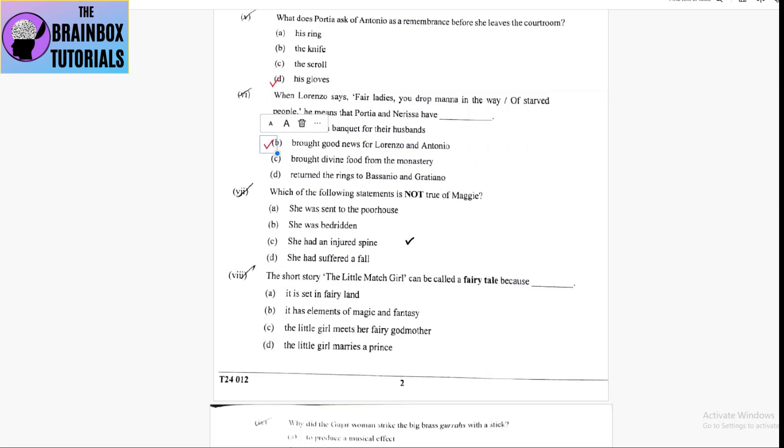Number 7, which of the following statements is not true of Maggie? Number A, she was sent to the poor house. She was bedridden. She had an injured spine and she had suffered a fall. Here, option number A is correct.